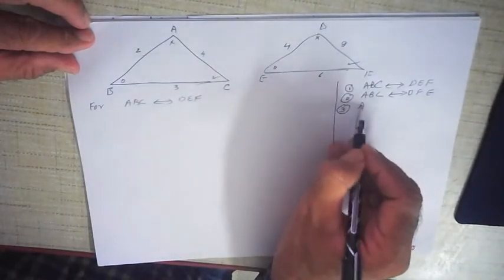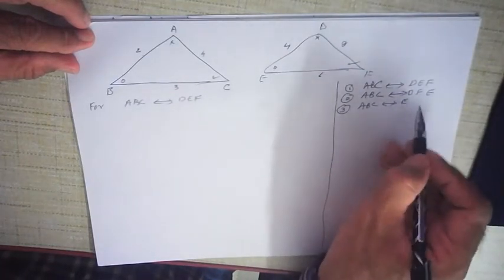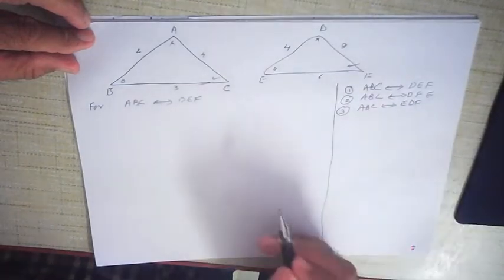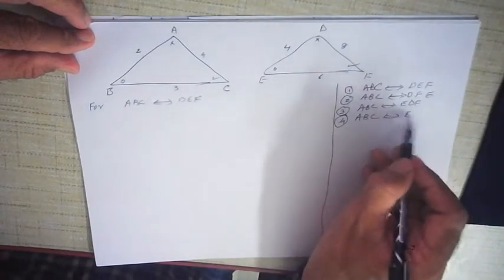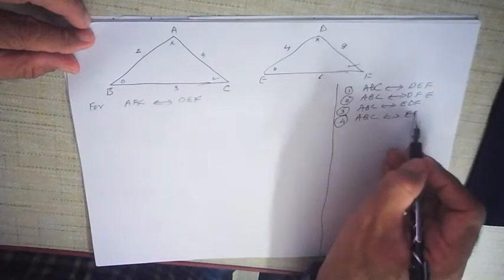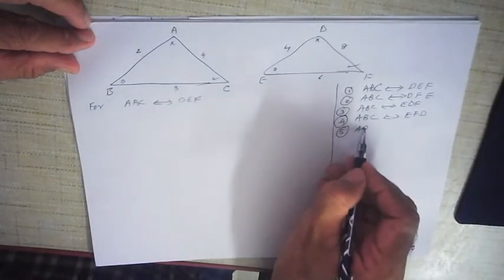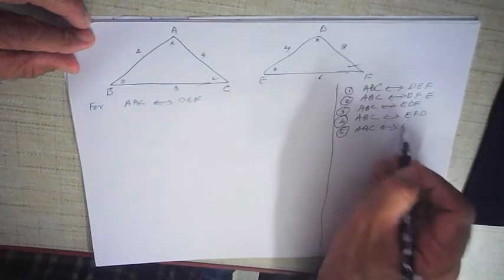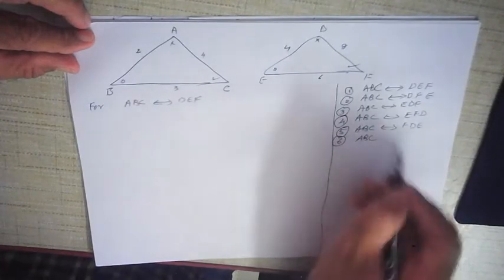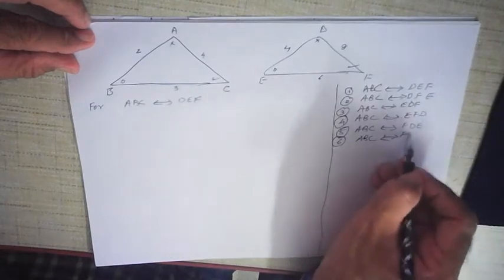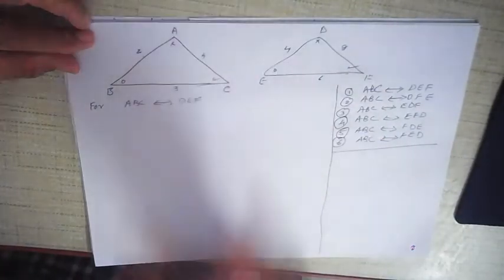Take a third one. I keep ABC as it is, but I change it — starting with E: EDF. Then I take a fourth one, ABC, and I keep E as it is but change D and F, so I get FD. Starting with F: FDE. And obviously the last one, ABC correspondence F — keep it as is, change E and D. So you get 6 different sets of correspondences between the vertices of 2 triangles.